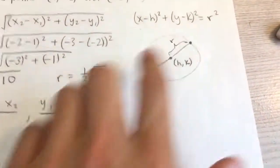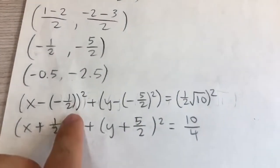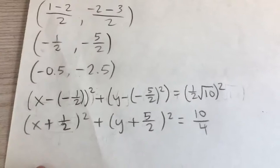Now we can plug in these three values: (1/2)√10, -1/2, and -5/2 into our equation for their values.